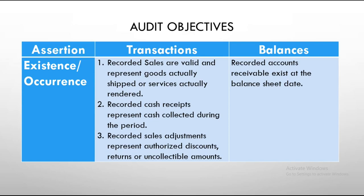For cash receipts, you start checking from the cash receipts book down to official receipts or cash sales invoice. Recorded sales adjustments represent authorized discounts, returns, or uncollectable accounts — check journal vouchers or journal book as to authorization and signatories of authorized personnel. In terms of balances, recorded amounts of accounts receivable exist at the balance sheet date. You may use confirmation of account receivable balances — negative for immaterial balances, positive for material balances.